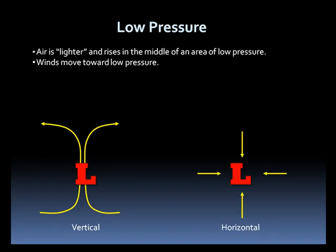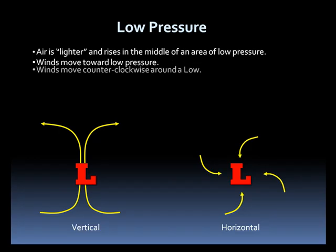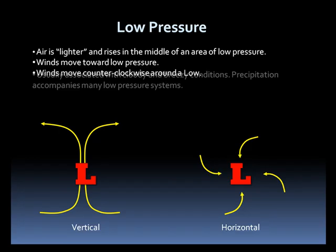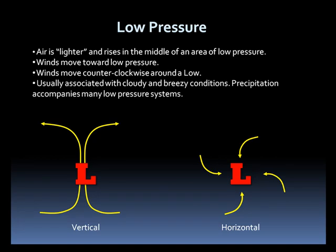The Coriolis force will turn these winds to the right, so the winds turn counterclockwise around an area of low pressure. Usually, low pressure systems bring clouds and breezier conditions. Precipitation is also fairly common.